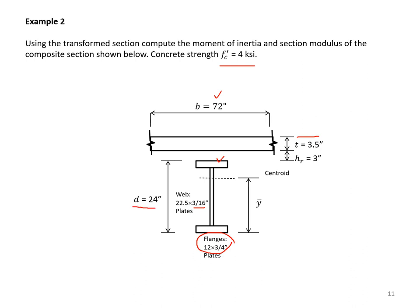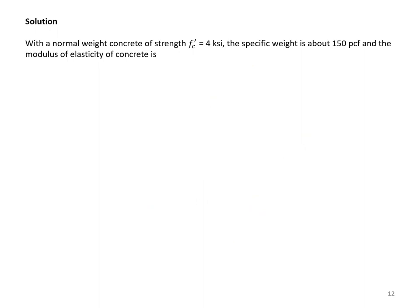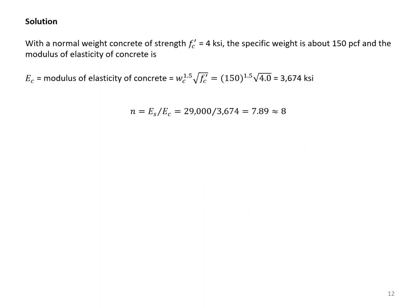The depth of the entire steel section is 24 inches, and Y-bar represents the centroid location. With normal weight concrete at f-prime-c equal to 4 ksi, the specific weight is about 150 pounds per cubic foot. Using the ACI recommended equation EC equals Wc to the power of 1.5 multiplied by the square root of f-prime-c, the result is 3674 ksi. The parameter N is then 7.89, which is customarily rounded to the nearest half or whole number — in this case, N equals 8.